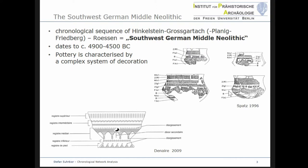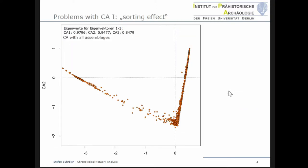In the first step, I used correspondence analysis for my chronological studies. As you can see here, the correspondence analysis of the complete data set, including all regions mentioned before, shows a parabola-like figure. At first sight, this result can be interpreted as a chronological sequence. However, as Spatz stated already in 1996, the younger part cannot be interpreted in a chronological way, since two different types of vessels — the so-called inversion bowls and the so-called Kugelgefäße — that actually existed at the same time are sorted one after another.